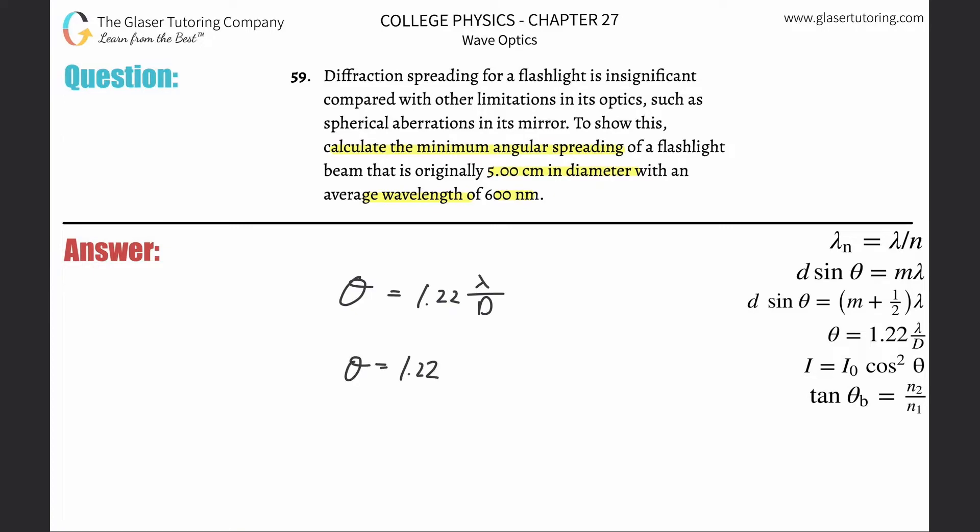So there's 1.22 times that wavelength of 600 nanometers, but we need that in meters. So simply take that and multiply it by 10 to the minus 9th and divide that by the diameter, but make sure that's in meters. Because you have to have consistent units there. Obviously, you don't need meters, but since they're both different, it's just easier to convert everything, in my opinion, to meters.